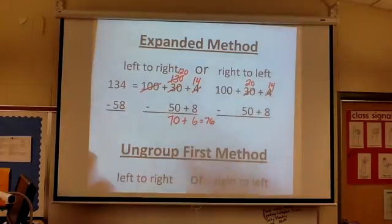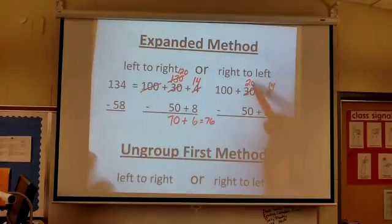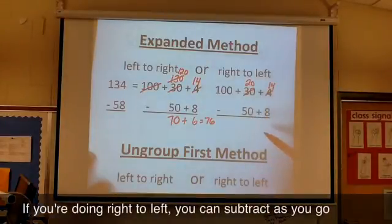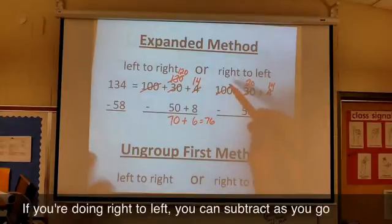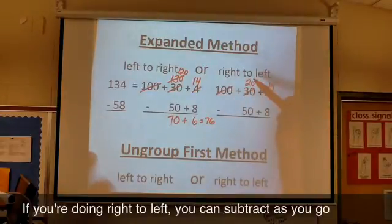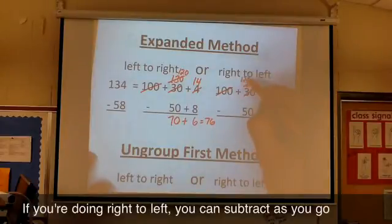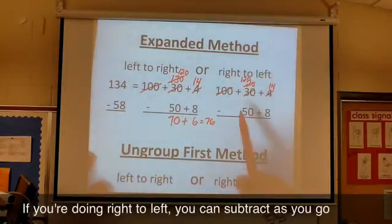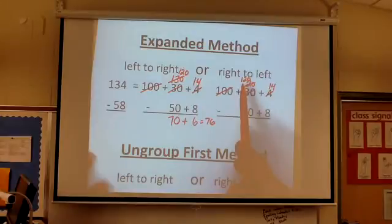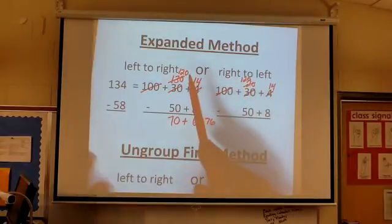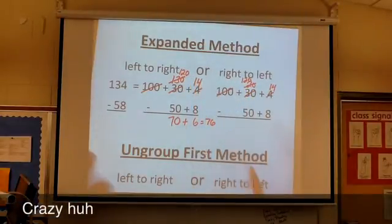I'm going to do all my ungrouping first. Let's see. Am I good here? 2 tens minus 5 tens? No, I need more tens. Where am I going to get more tens? How about from the 100 here? So instead of 2 tens, I'm going to make it 12 tens. Now you'll notice that this one ends up looking exactly like this one, although we arrived at it in a different way.